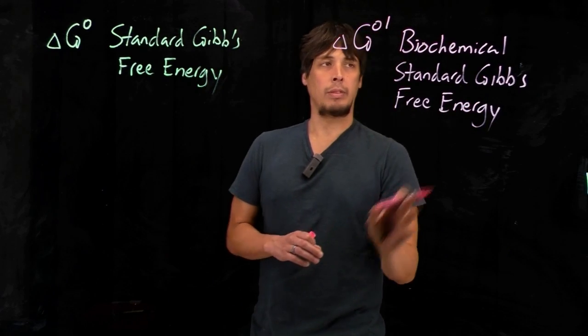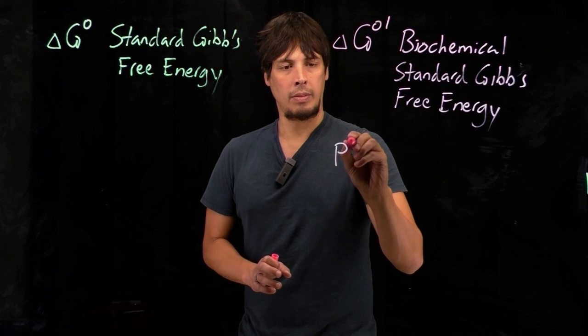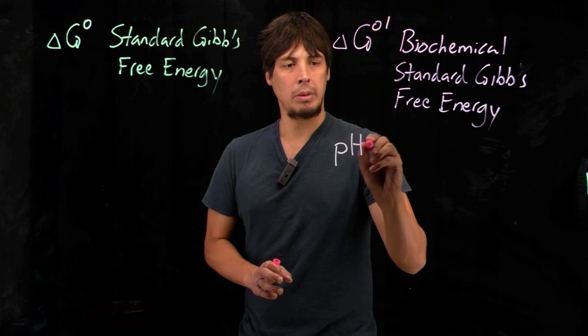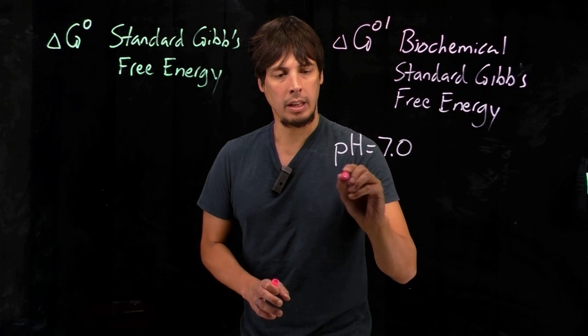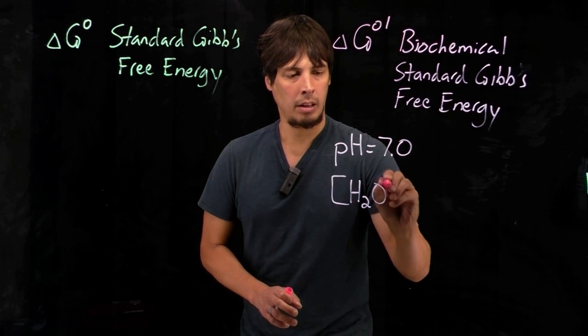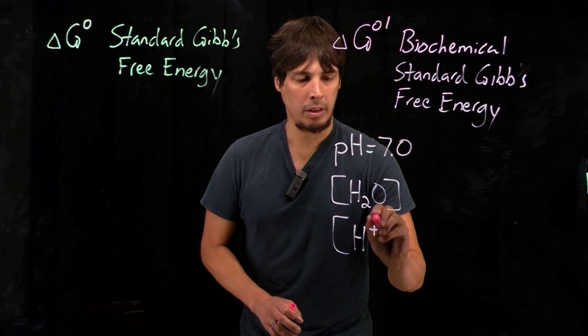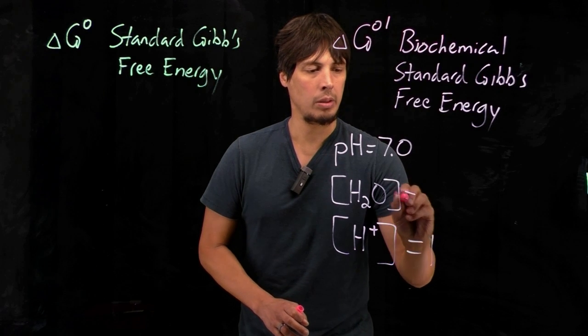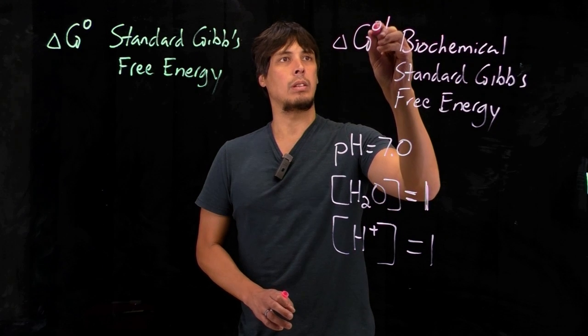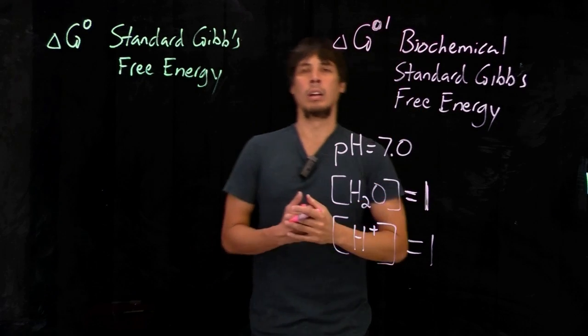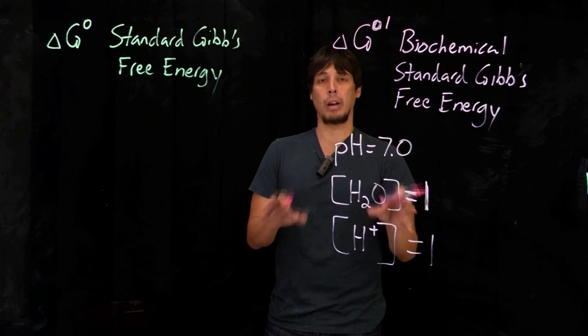There's a prime added. This is a biochemical standard Gibbs free energy. For biochemical standard Gibbs free energy, there are just a few slight differences. First, the standard conditions are that the pH is equal to seven. And then any water or protons that are in the balanced equation are both set equal to one. And that gives us, that makes it easier to calculate changes in free energy in biochemical systems.